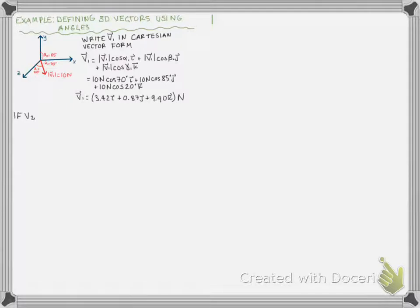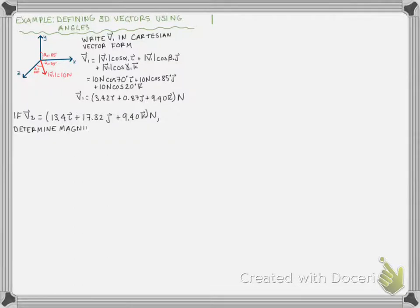We're going to extend this a little bit further and look at a second vector. We're going to define vector v2 using its Cartesian vector form. It's going to be equal to 13.4i plus 17.32j plus 9.40k newtons. And from this Cartesian vector form, we would like to determine the magnitude of v2 and the angle it makes from each of the axes — so we're going to determine alpha2, beta2, and gamma2.